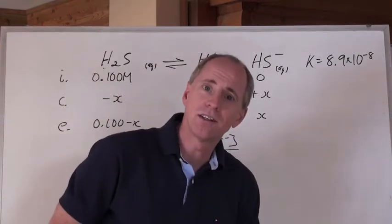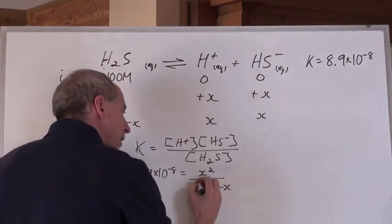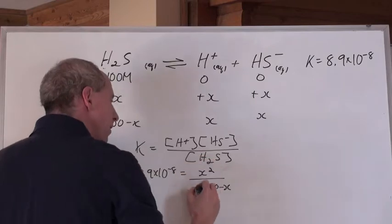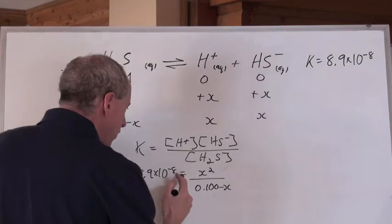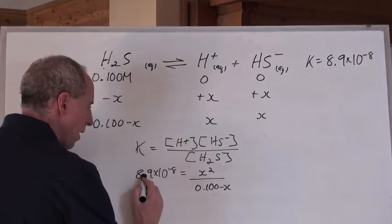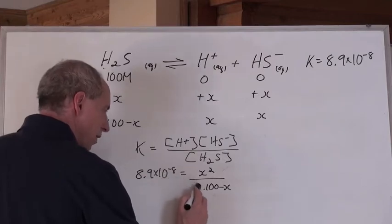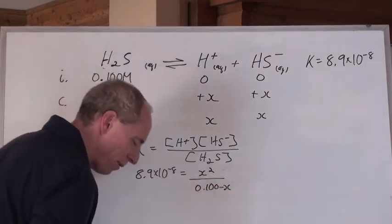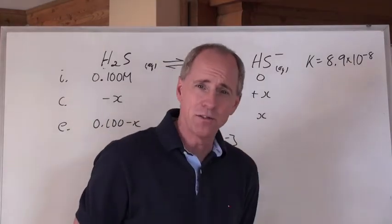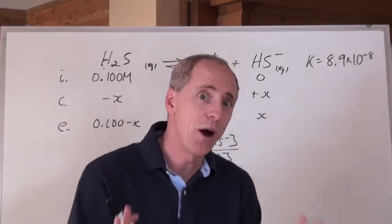In the last example, we had a squared term on both sides and could take the square root. Now we're stuck - we've got 8.9 times 10 to the negative 8 that we'd have to multiply through, and X squared on top. It looks like unavoidable quadratic time. Well, not really.